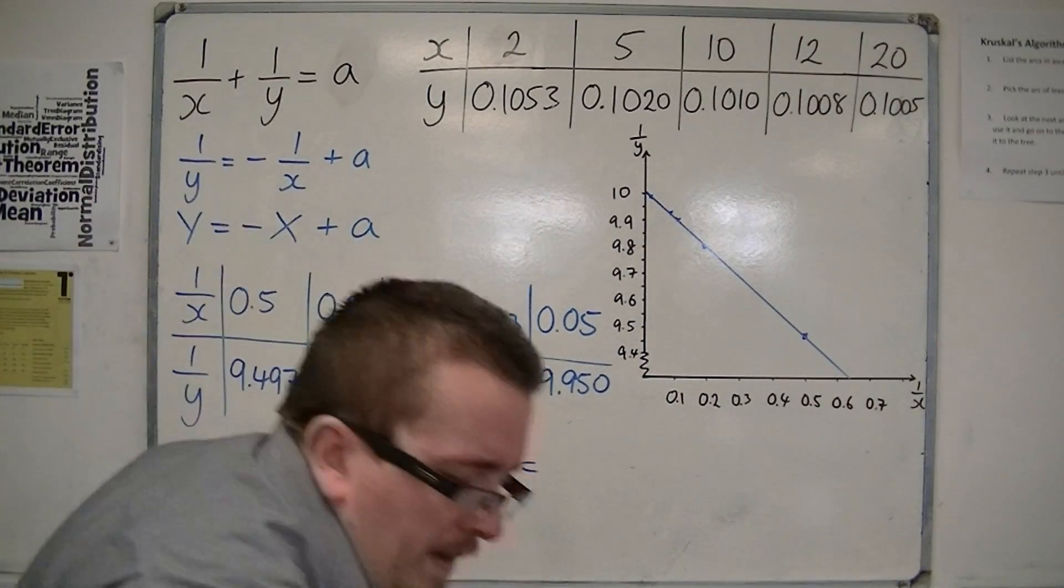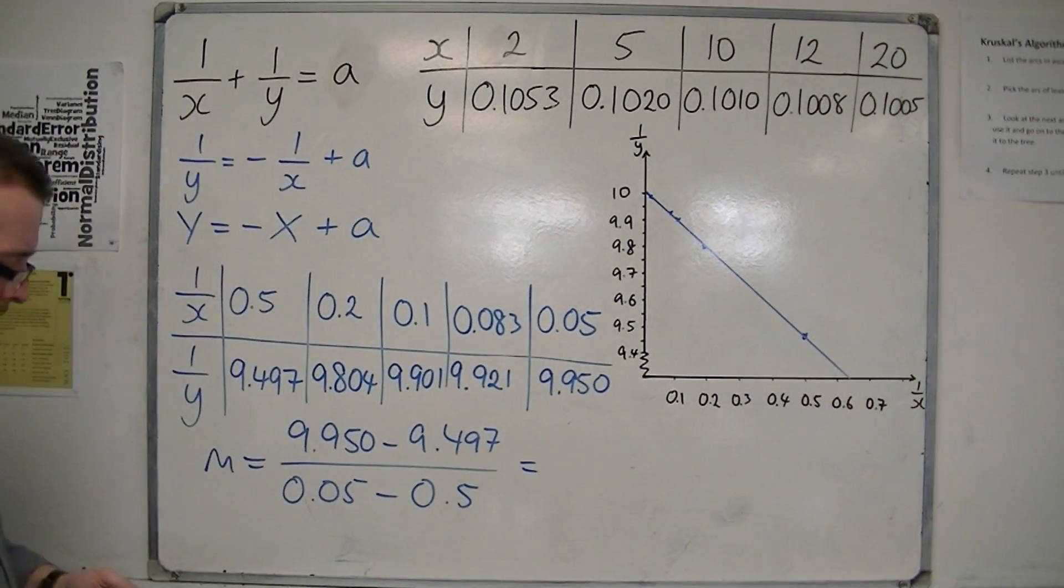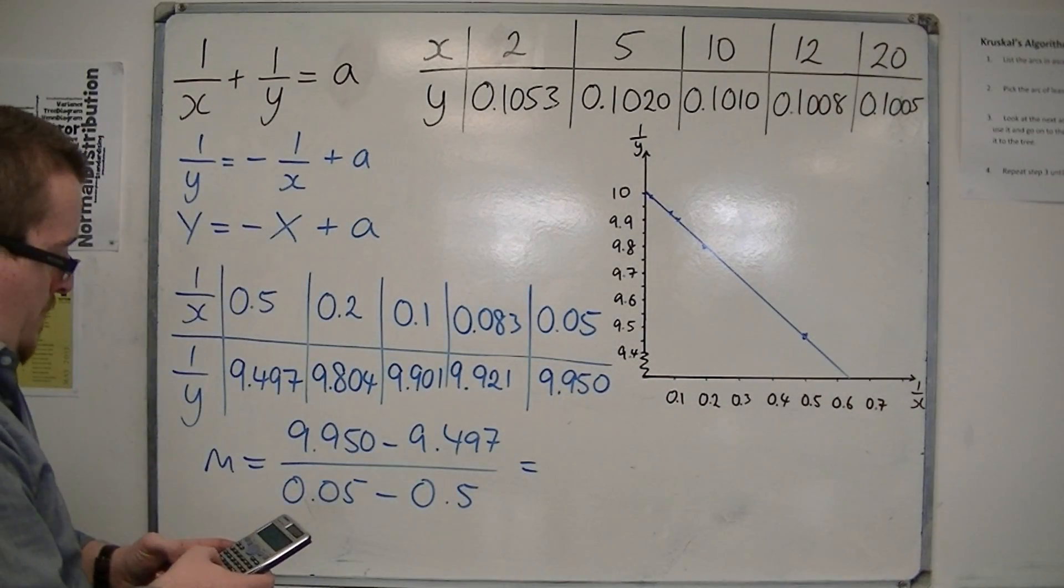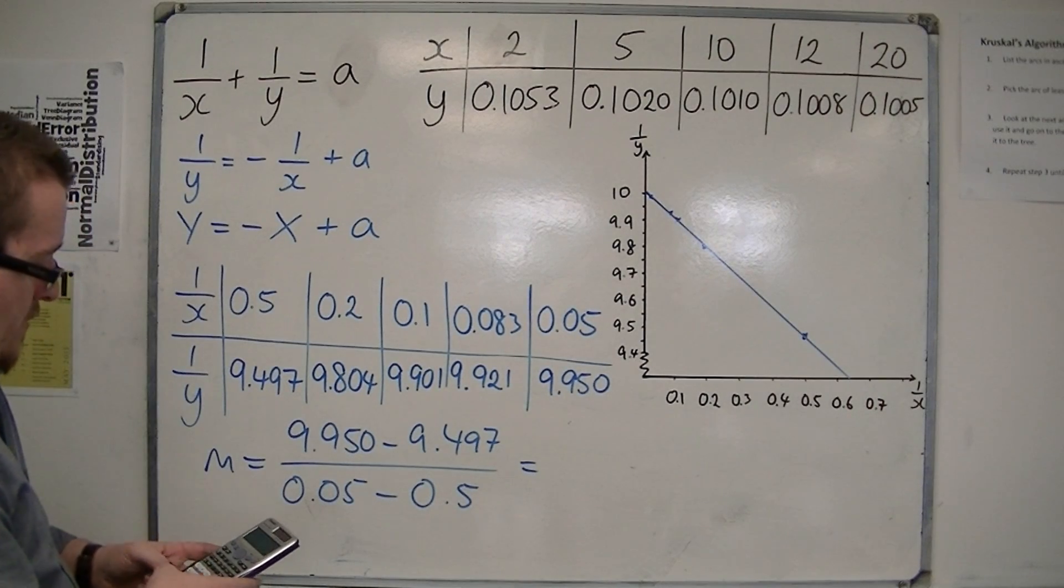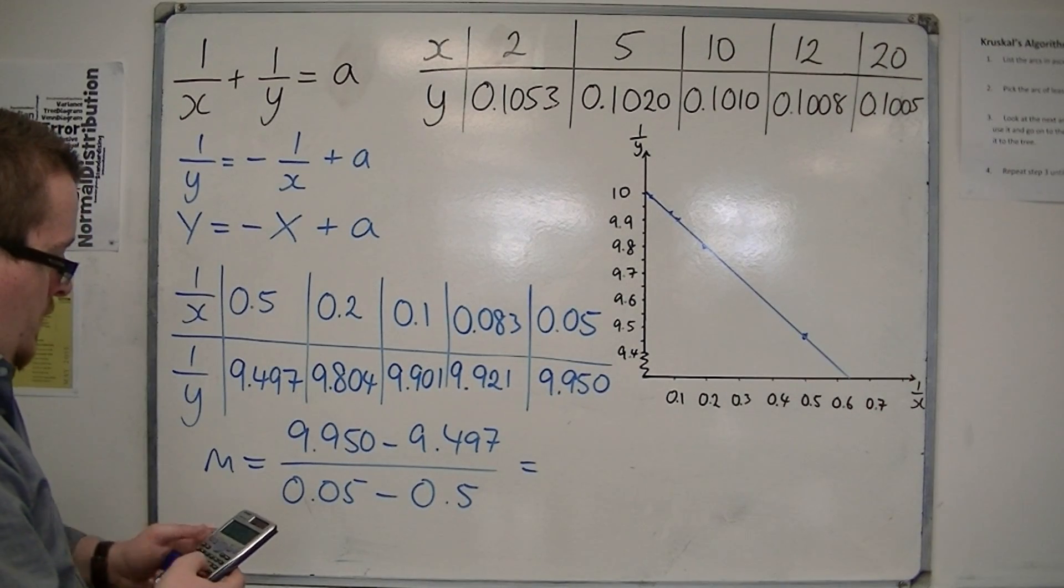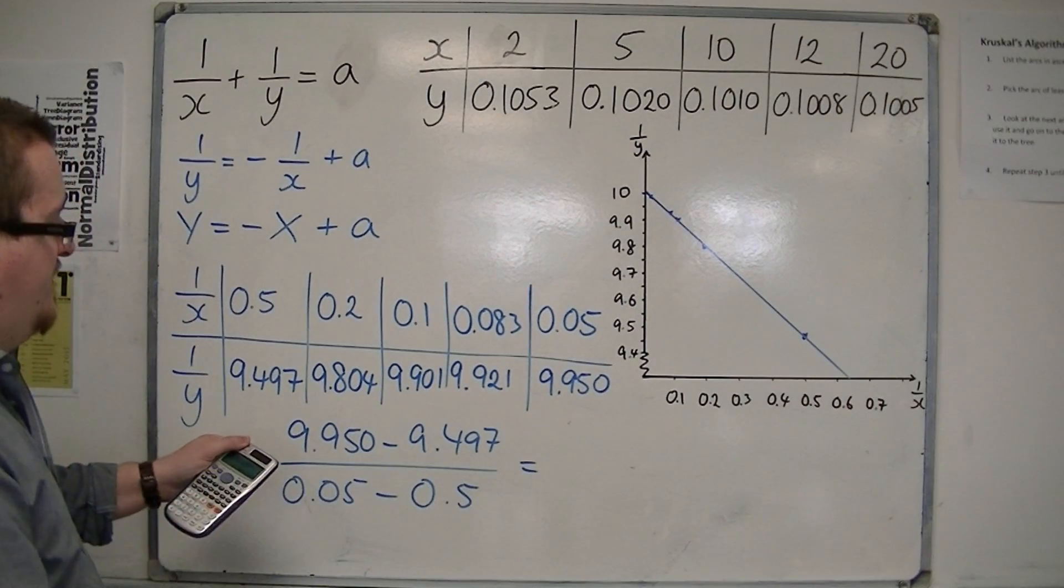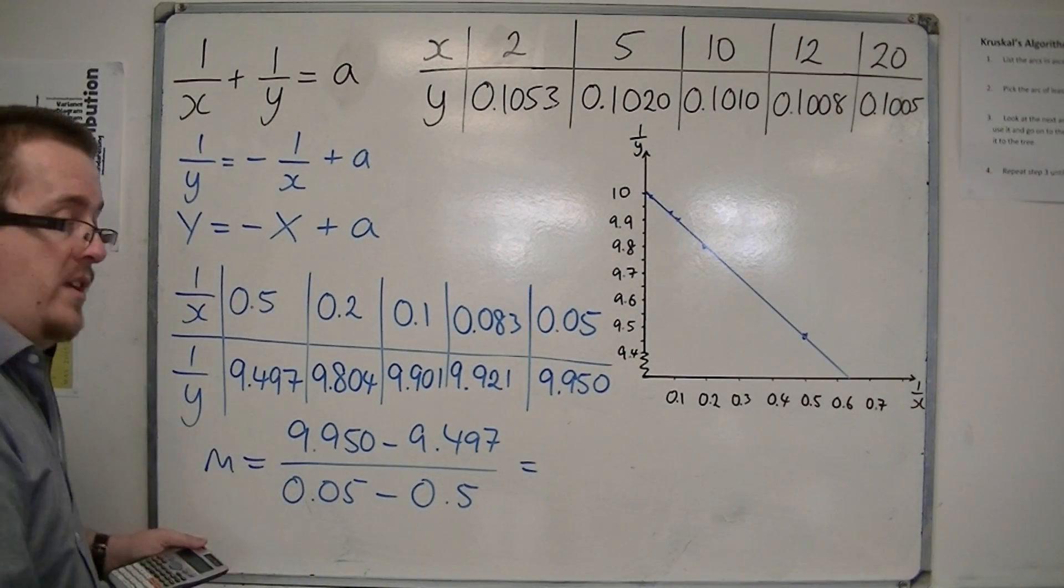So we try that in the calculator, 9.950, take away 9.497, divided by 0.05, take away 0.5.